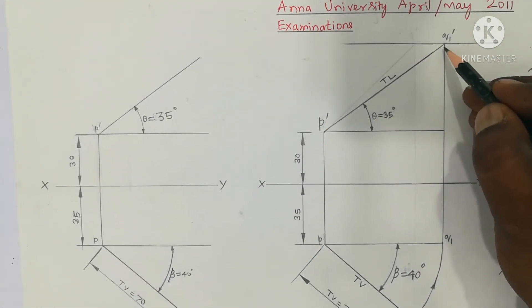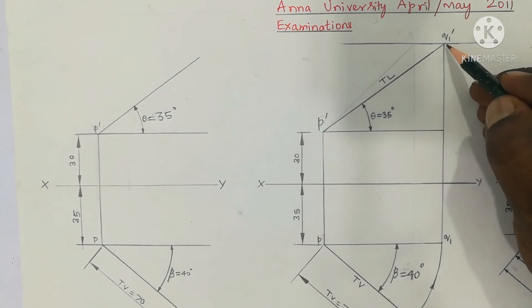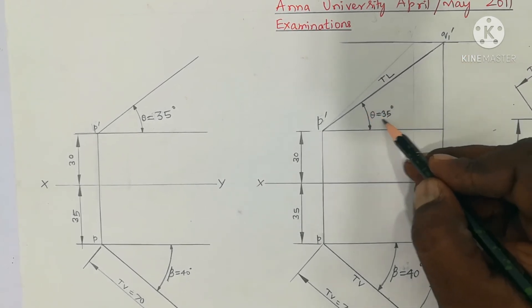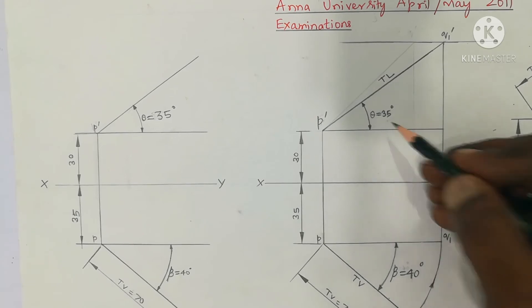Understand? So this is the true length of the line. P'Q1' is the true length of the line. That is the inclination theta. Understand? So we will try to get the step 3 detail. It is a finished step.